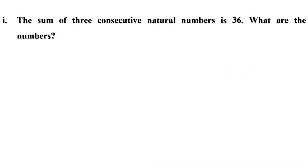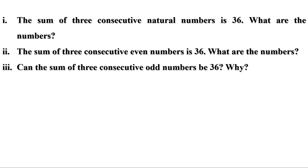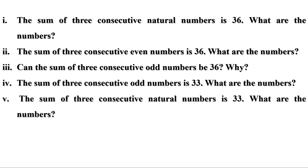Next problem. The sum of 3 consecutive natural numbers is 36 — what are the numbers? The sum of 3 consecutive even numbers is 36 — what are the numbers? Can the sum of 3 consecutive odd numbers be 36, and why? The sum of 3 consecutive odd numbers is 33 — what are the numbers? The sum of 3 consecutive natural numbers is 33 — what are the numbers? Let us do these one by one.